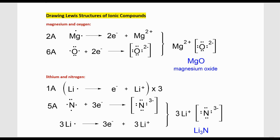Welcome. In this short video, I'm going to show you how to draw the Lewis structures of ionic compounds and from that write the chemical formulas. I'll also show you how we determine whether a bond is ionic, covalent, or polar covalent using three simple systems, and I'll show you which one of these is best.